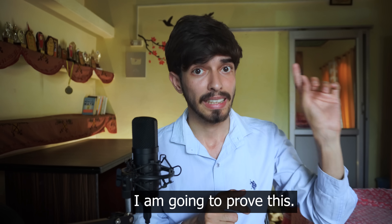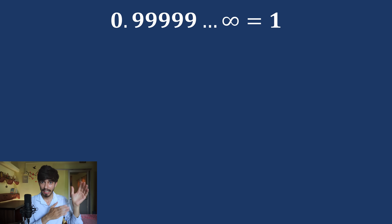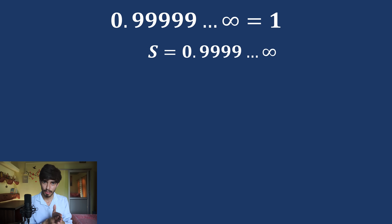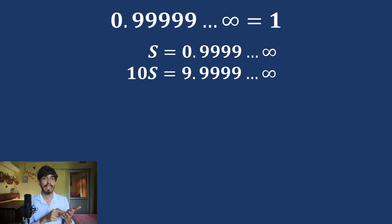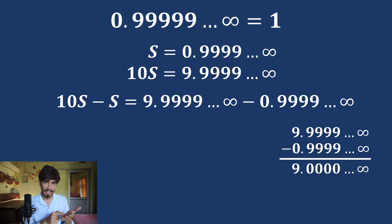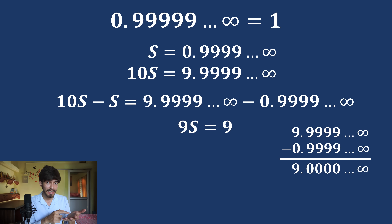I am going to prove this: 0.9999... repeating till infinity is equal to 1. I am not saying approximately equal to — I am saying absolutely equal to, straight up 1. Suppose S equals 0.9999 repeating till infinity. If we multiply S by 10, it would be 9.9999 repeating till infinity — the decimal shifts. Now let's do 10S minus S: that is 9.9999... minus 0.9999... So 9S equals 9, and S equals 1.